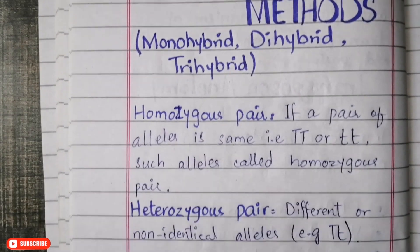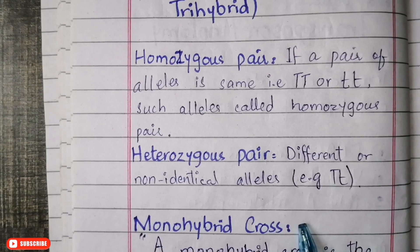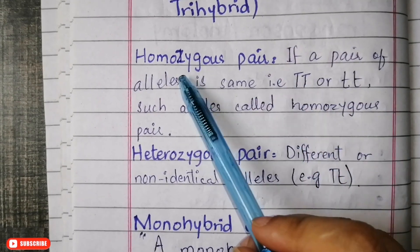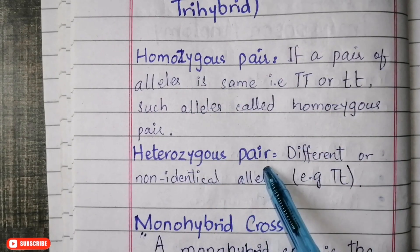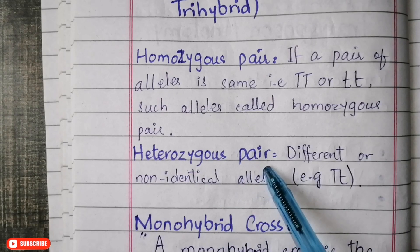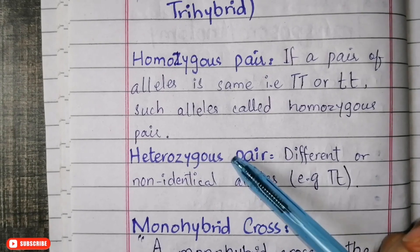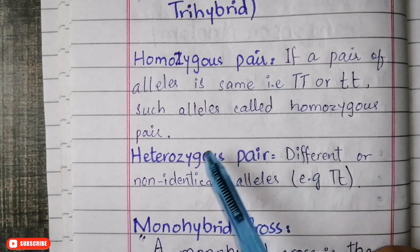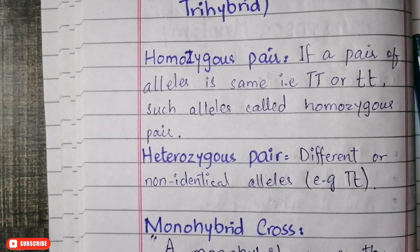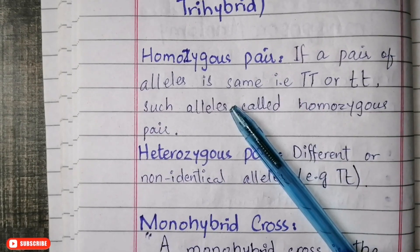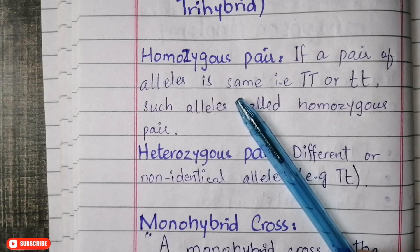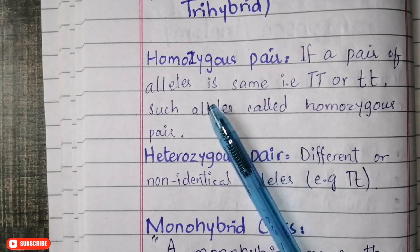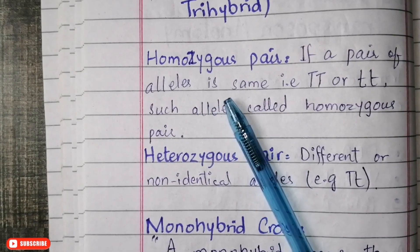Let's first figure out two important definitions before moving to monohybrid cross: what is homozygous and what is heterozygous. We all know what an allele is — each gene consists of two alleles. Alleles are basically alternative parts of a gene. A gene may be homozygous or it may be heterozygous.